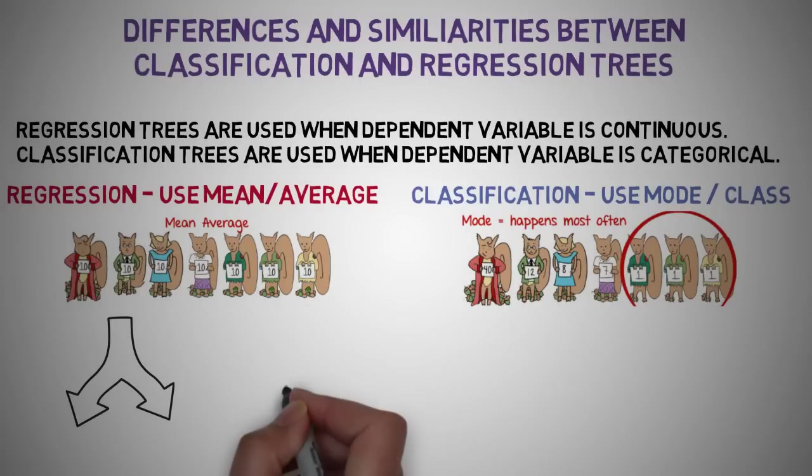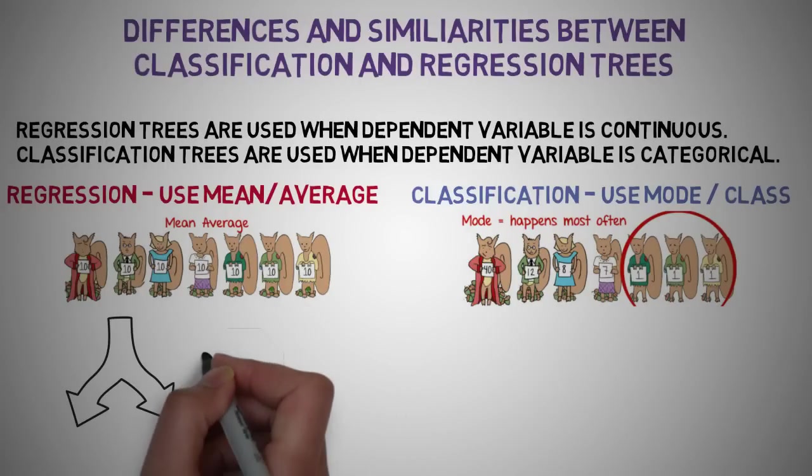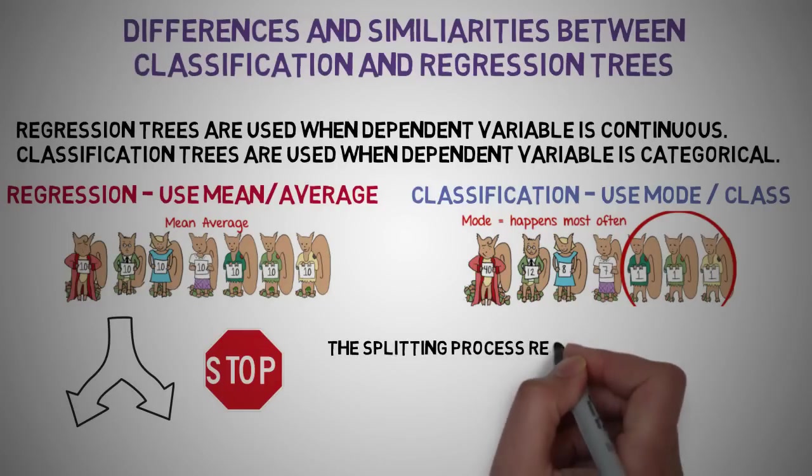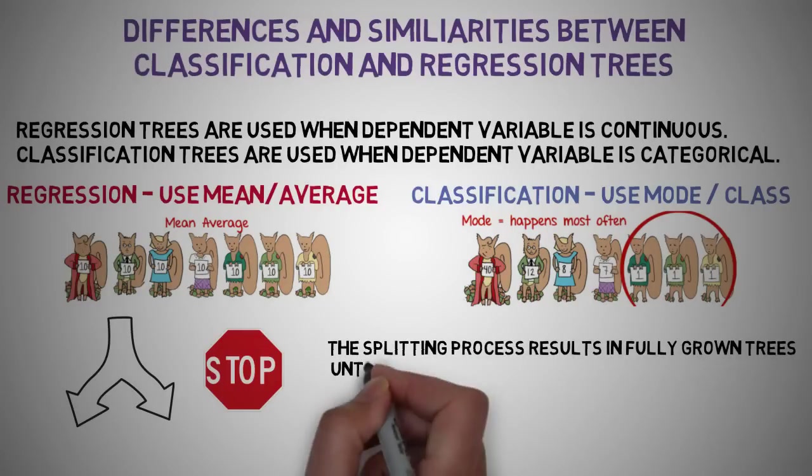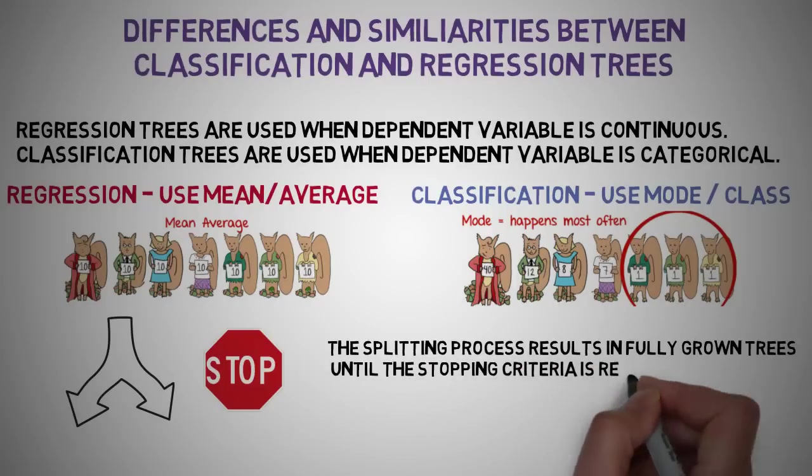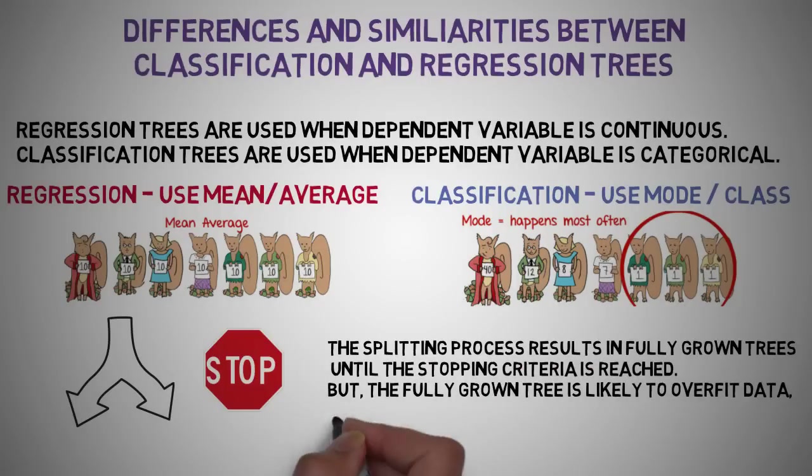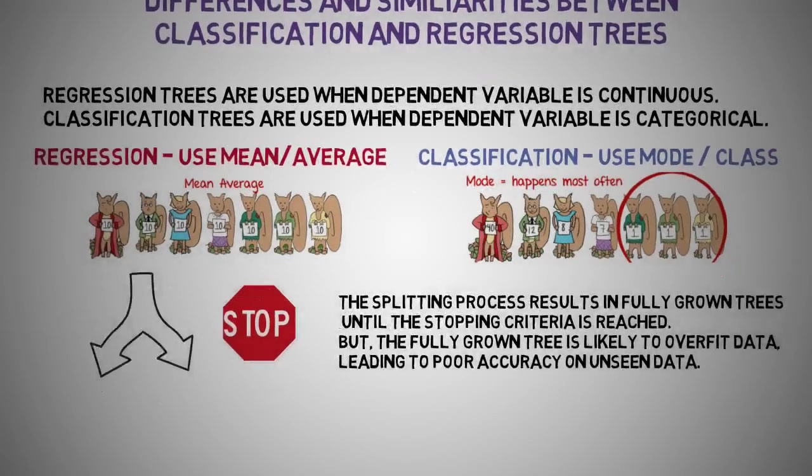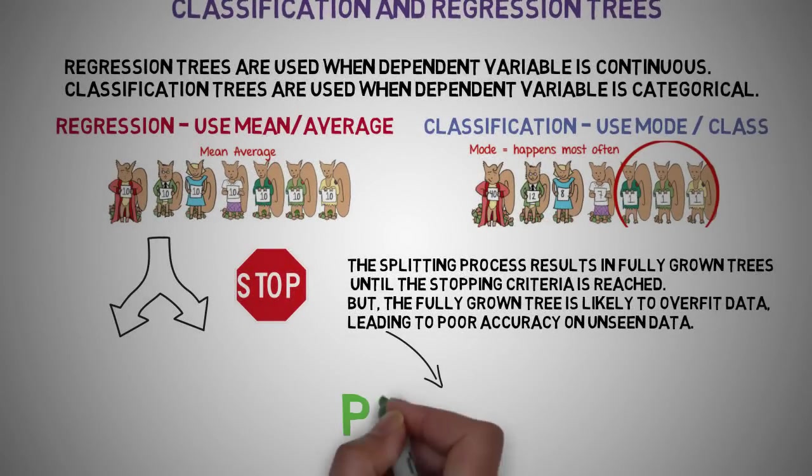This splitting process is continued until a user-defined stopping criteria is reached. For example, we can tell the algorithm to stop once the number of observations per node becomes less than 50. The splitting process results in fully grown trees until the stopping criteria is reached, but the fully grown tree is likely to overfit data, leading to poor accuracy on unseen data. This brings pruning, which is one of the techniques used to tackle overfitting.